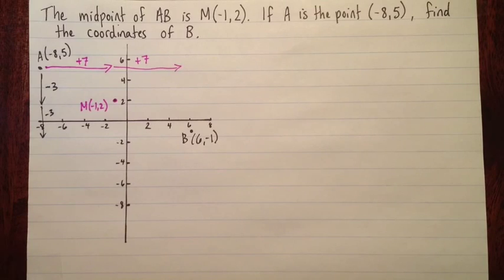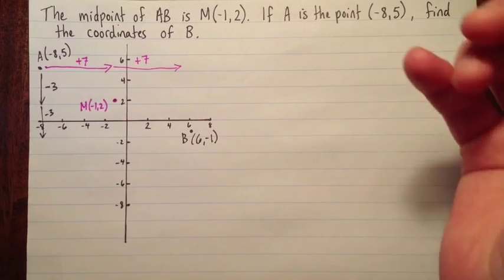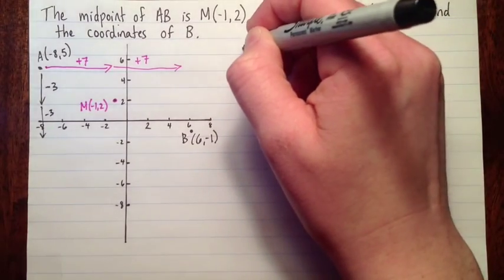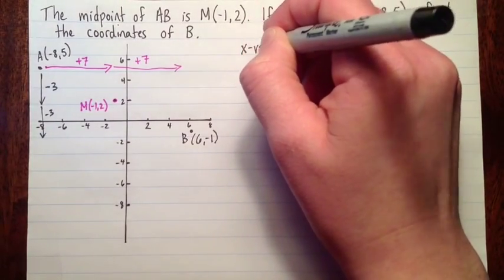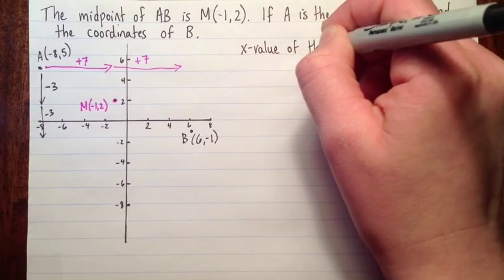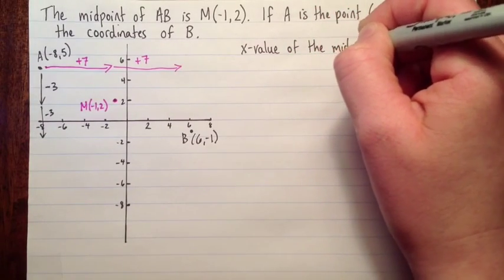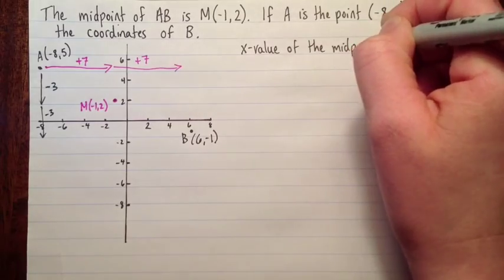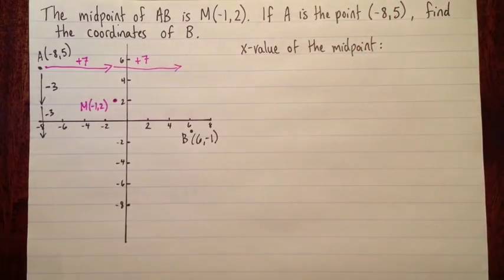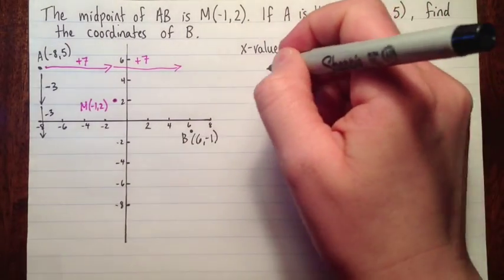Another way we can do it is we can use the midpoint formula, and we'll use the x and y values separately. So let's do the x value first. The x value of the midpoint. Because I'm doing it separately, it's really important to label with words so we know what's going on. So the x value of the midpoint is negative 1.